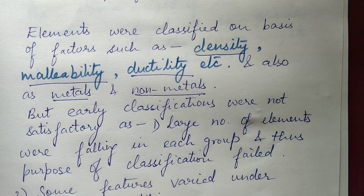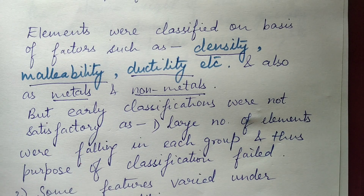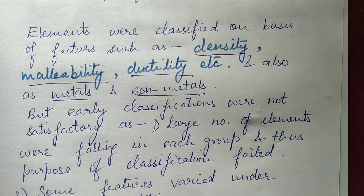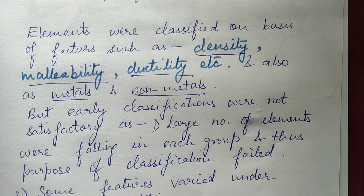There were certain scientists who thought of preparing other methods of classification. Among those scientists, we will be studying a few. The first scientist prepared a method of classification in which he made groups of three elements put together and called them triads. In the next video, we will be studying about Dobereiner's Triads — the method of classifying elements developed by the scientist Dobereiner.